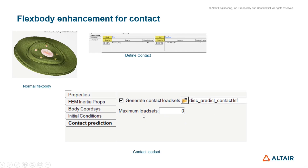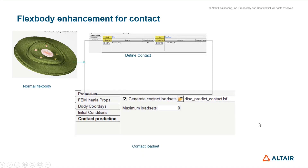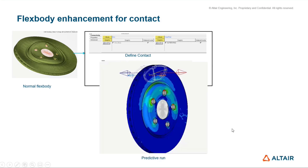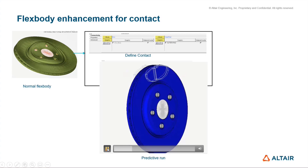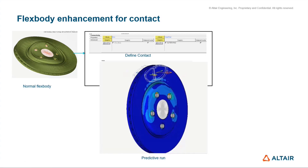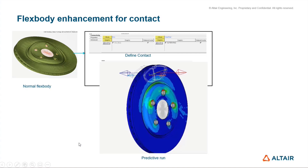In the Contact Prediction tab, one can provide a load set file which will help the solver write out the contact loads. You can also provide the maximum number of load sets to be considered. For each load set, a mode shape gets added. However, a zero value — which is the default — is fine; the solver will automatically calculate the right number of load sets needed. Once the model is set up, we submit to the solver, which writes out the predicted contact loads into the load set file.